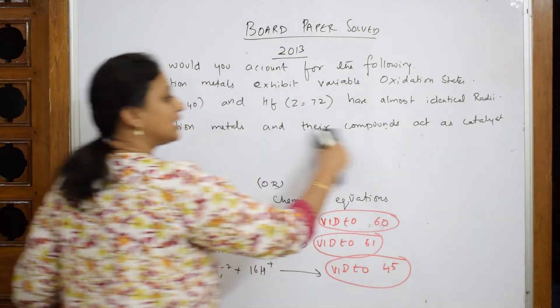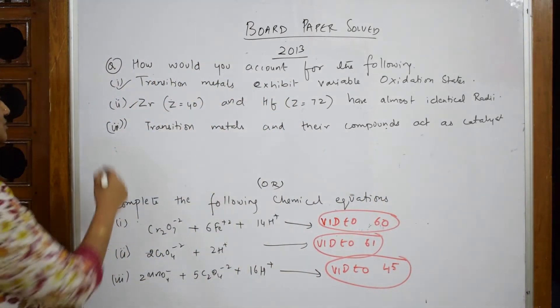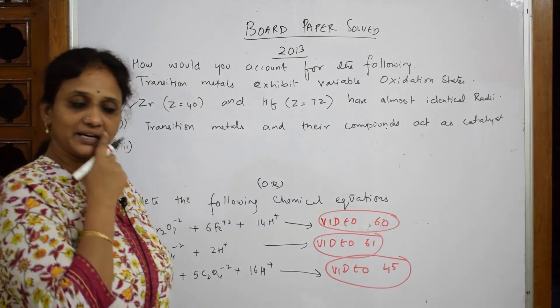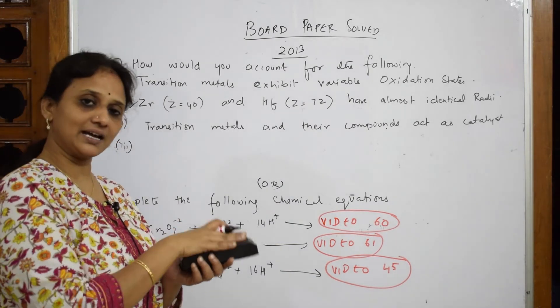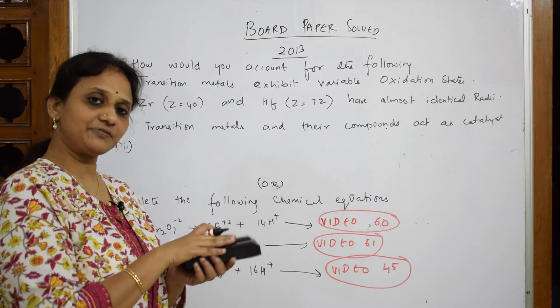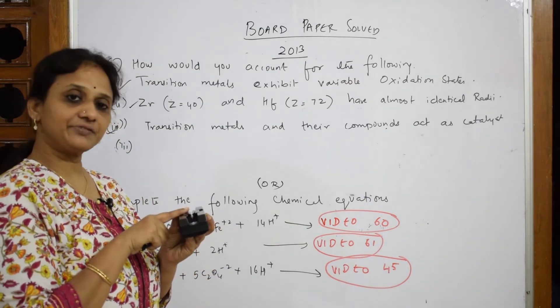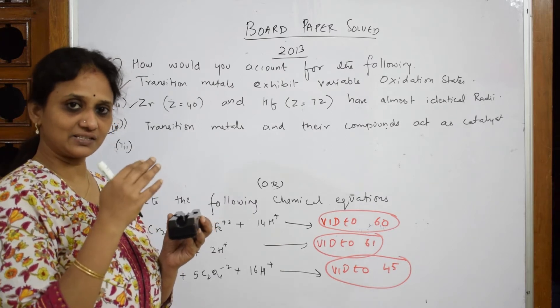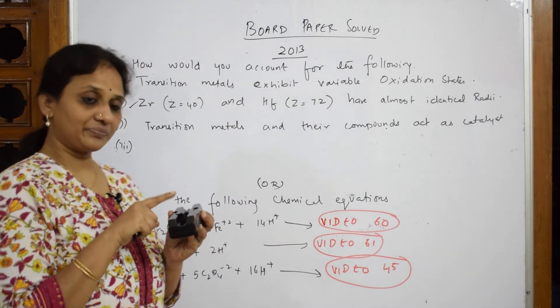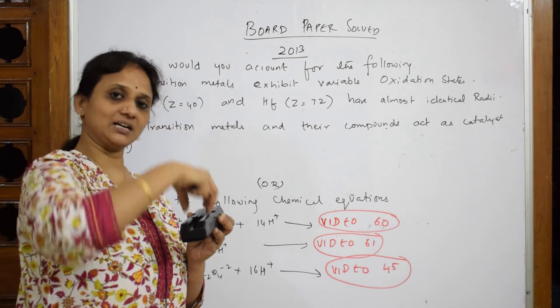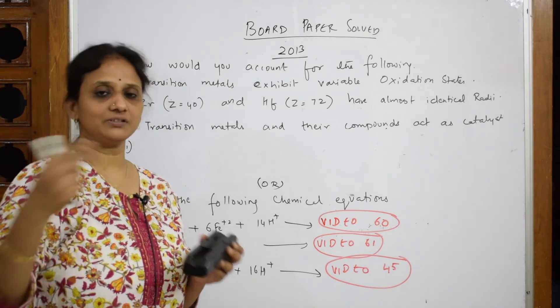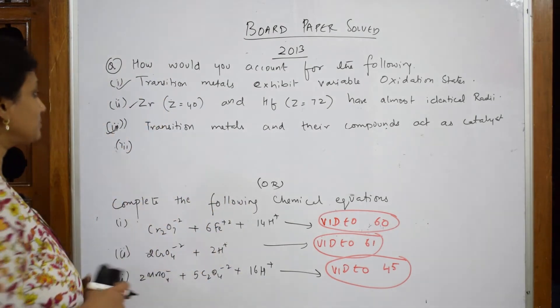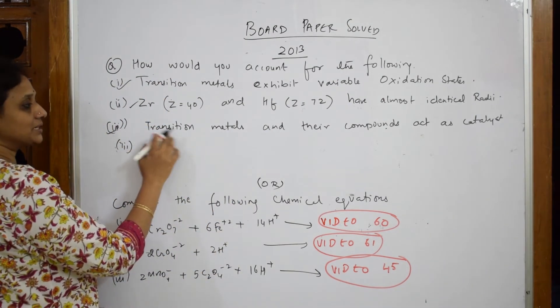So what did we say? Transition metals act as catalysts. Yes. Whenever we speak about the concept of catalysts, what should strike your mind? For a catalyst to come in and act, it should have a surface area. Right. That is what we studied. It should have a surface area where you have an active site. Yes, just like an enzyme catalyst.